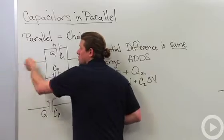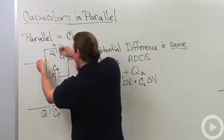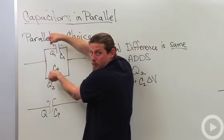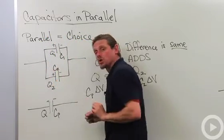So if I start charging this combination by sending some charge in here, that charge can go in two different branches. So it could charge up this capacitor or it could charge up that one.